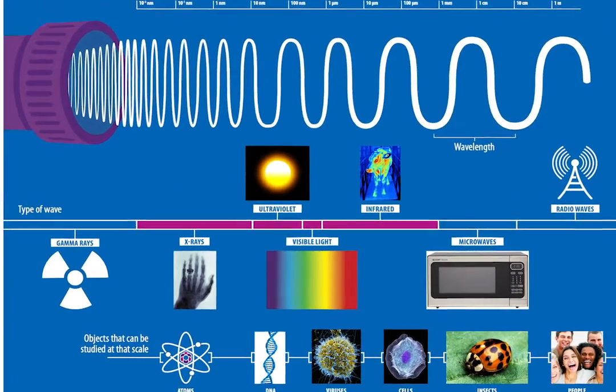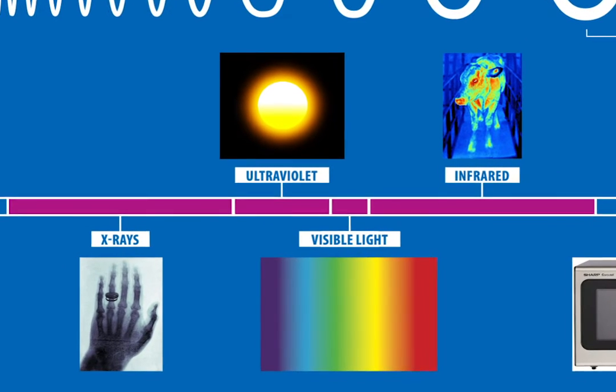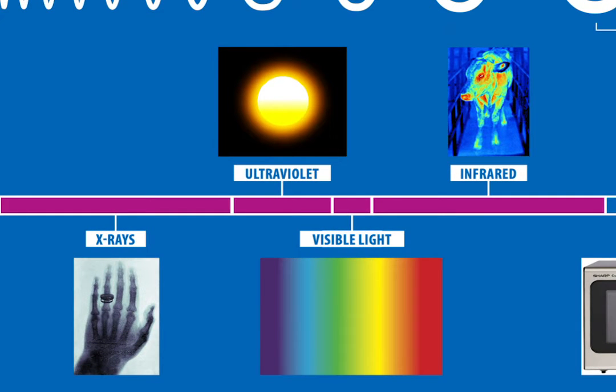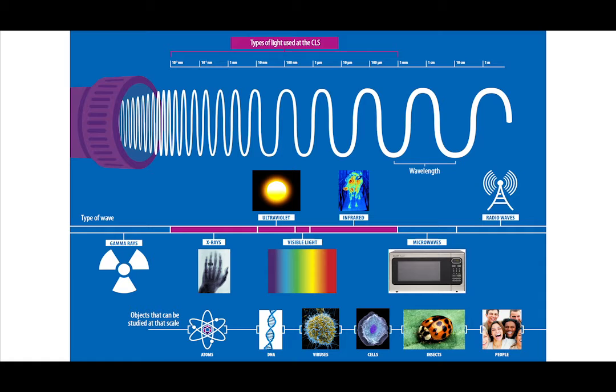This slide also shows what parts of the electromagnetic spectrum the Canadian Light Source uses. We use infrared, visible light, ultraviolet, and x-ray radiation. The sample and the scientific question determine what energy or wavelength and beamline we will be using for our experiments.